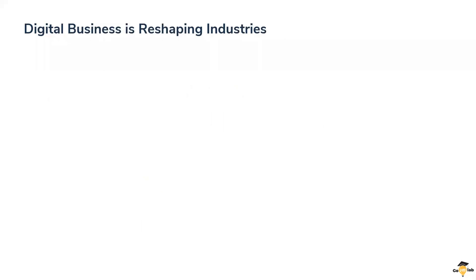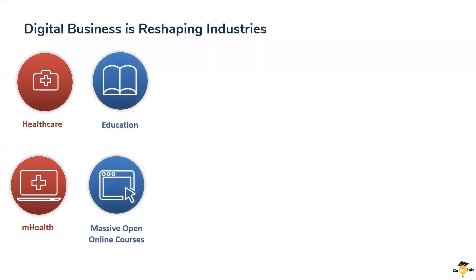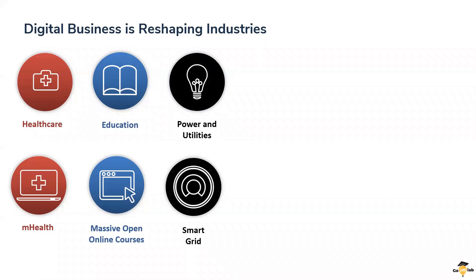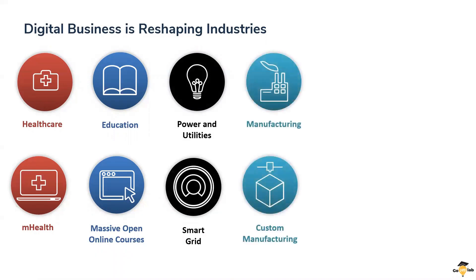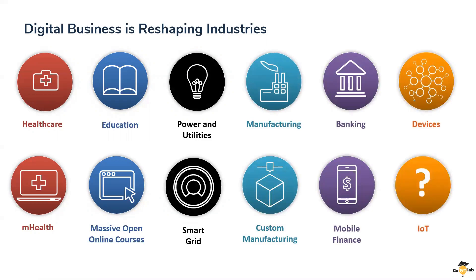This digital revolution has not impacted just one specific sector — it has impacted every single industry. Traditional healthcare has evolved as mobile health. Traditional classroom-based education has evolved as massive open online courses like Udemy, Edureka, and Coursera. Traditional power and utilities have evolved as smart grids. Traditional manufacturing has evolved as custom manufacturing. Traditional banking has evolved as mobile banking. And traditional devices are evolving as IoT devices, making our homes smarter — smart watches and smart homes are examples.